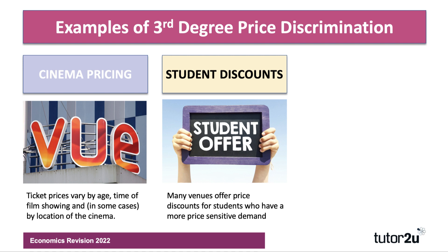Students often get significant discounts on the products they buy. Many venues offer price discounts for students who typically have a lower income and reduced spending power and therefore a more price sensitive demand. In other words, the coefficient of price elasticity of demand is probably higher. That's also true for things like old age pensioners as well.